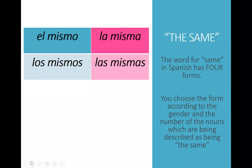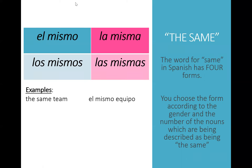The same has four forms and you have to choose the form according to the gender and number of the nouns being described as the same. Your options are: el mismo, la misma, los mismos or las mismas. Let's take a look at some examples. The same team — en español: el mismo equipo. The word 'team,' equipo, is masculine and singular, therefore we choose the masculine and singular version of 'same' in Spanish: el mismo equipo.